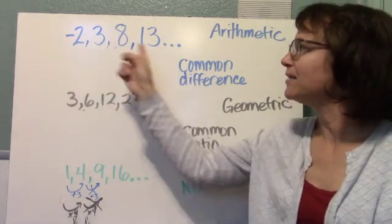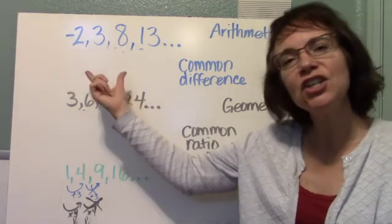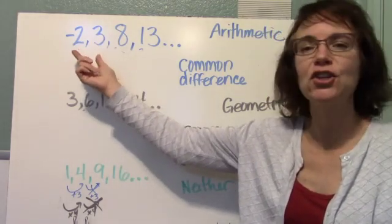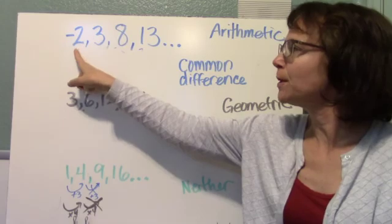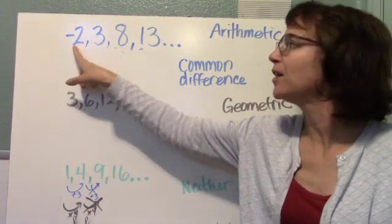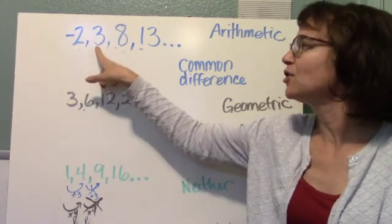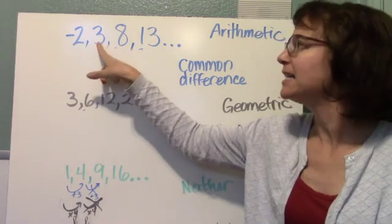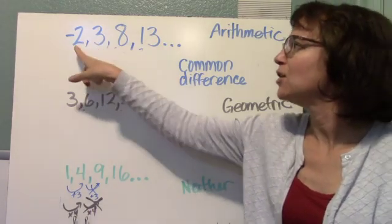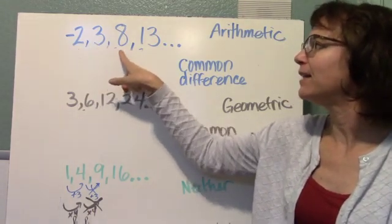In order to tell what kind of sequence you're looking at, you need to look at the relationship between the terms. So if I go from term number 1 to term number 2 here, I can see that there's a relationship that's the same as if I go from 3 to 8. Here I'm adding 5 every time.